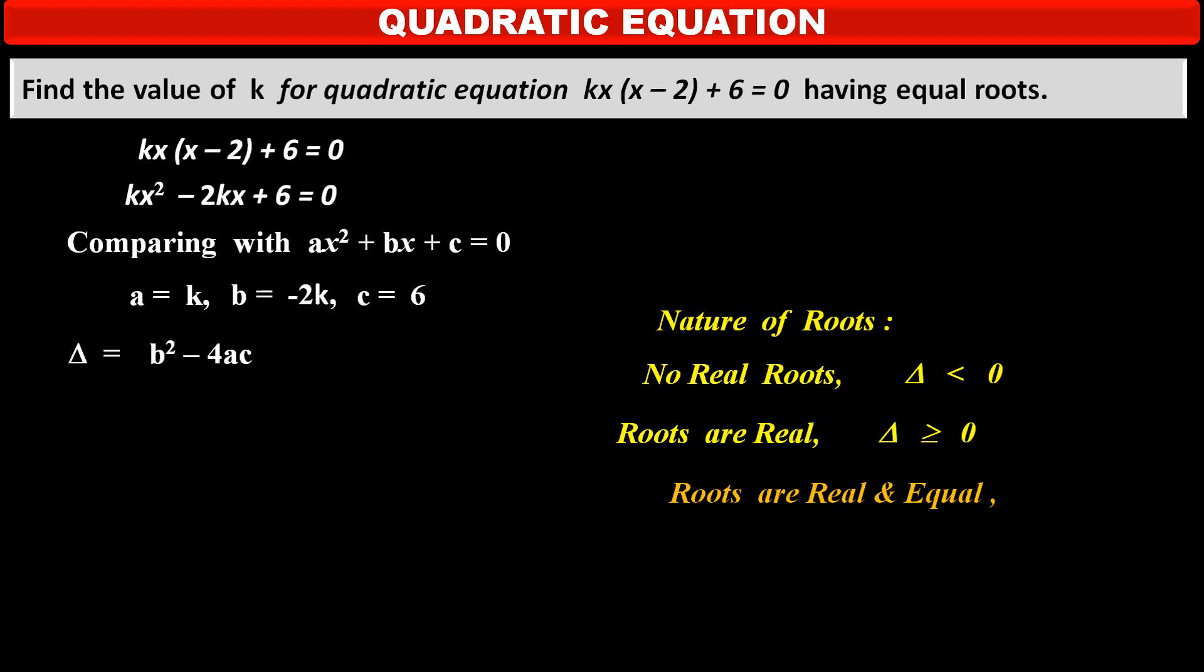If roots are real and equal, then delta discriminant is equal to 0. And if roots are real and unequal, then discriminant delta is strictly greater than 0. Means, it is positive.